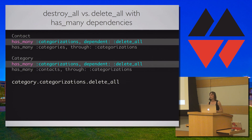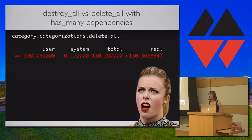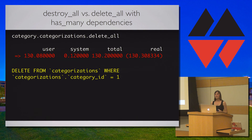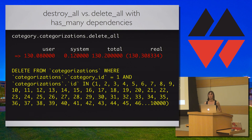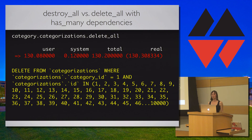What if we set the dependency option to delete_all? It should be fast and efficient, right? Let's run it. A hundred and thirty seconds — that wasn't fast at all. Something's not right. I expected the SQL to be: delete from categorizations where categorizations.category_id equals the target value. Instead, I got: delete from categorizations where categorizations.category_id equals the value and categorizations.id in 4, 5, 6 ... all the way to 10,000. This is because when deleting through a collection proxy, the delete_all dependency needs to return an array of all the records that have been removed, which makes the query very slow.